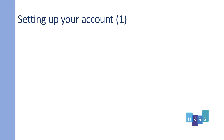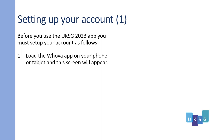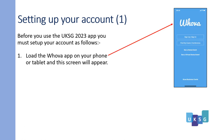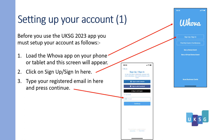Setting up your account, slide one. Before you use the UKSG 2023 app, you must set up your account as follows. Load the Hoover app on your phone or tablet and this screen will appear. Click on 'sign up, sign in here'. Type your registered email in here and press continue.